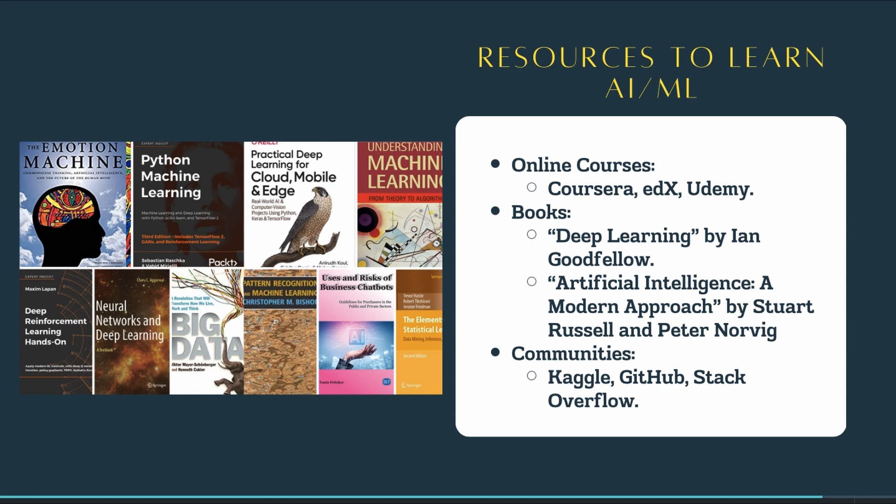Krisha and I will also try our best to prepare and publish useful resources in this context. For self-paced learning, books like 'Deep Learning' by Goodfellow, 'Artificial Intelligence: A Modern Approach' by Stuart Russell and Peter Norvig, and 'Python for Data Analysis' by Wes McKinney are great resources. Aside from books and online courses, there are also vibrant communities on platforms like Kaggle, GitHub, and Stack Overflow — great places to find datasets, share projects, and get feedback or help.